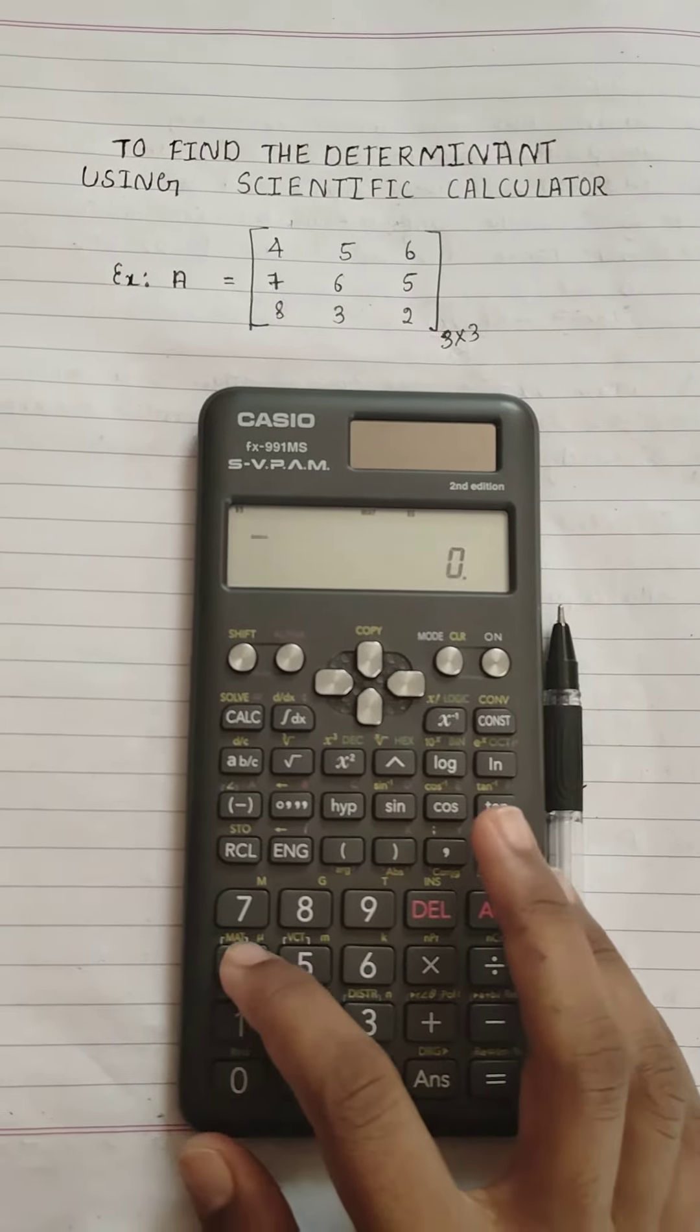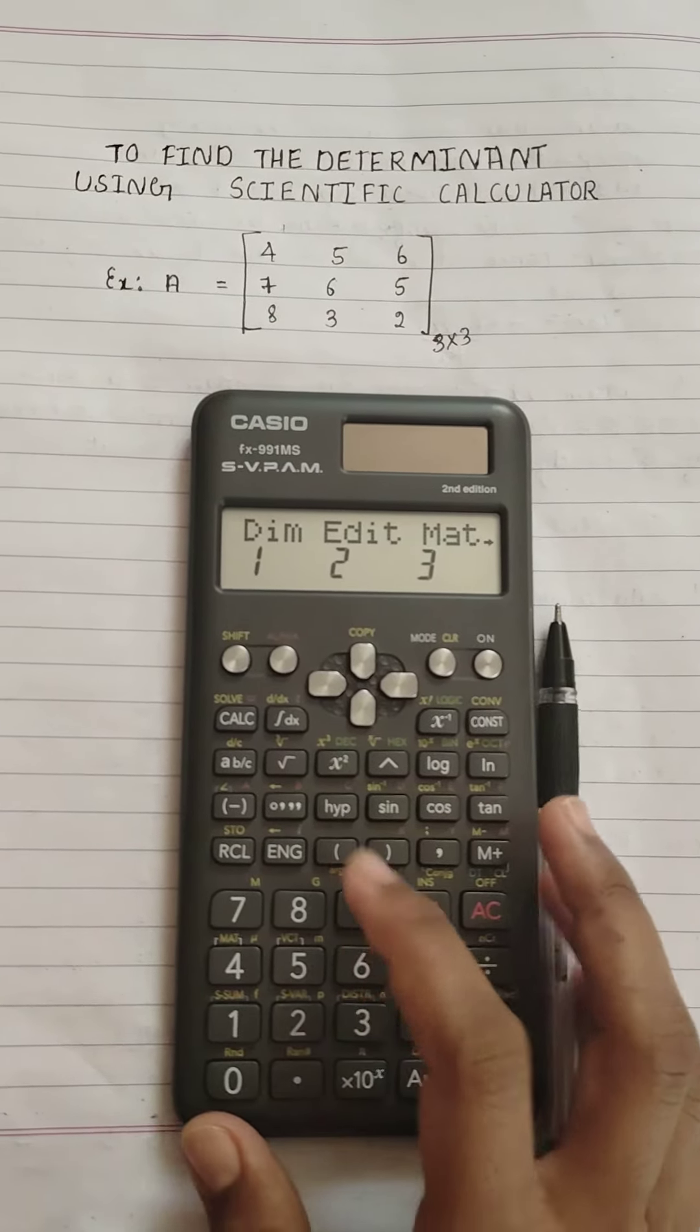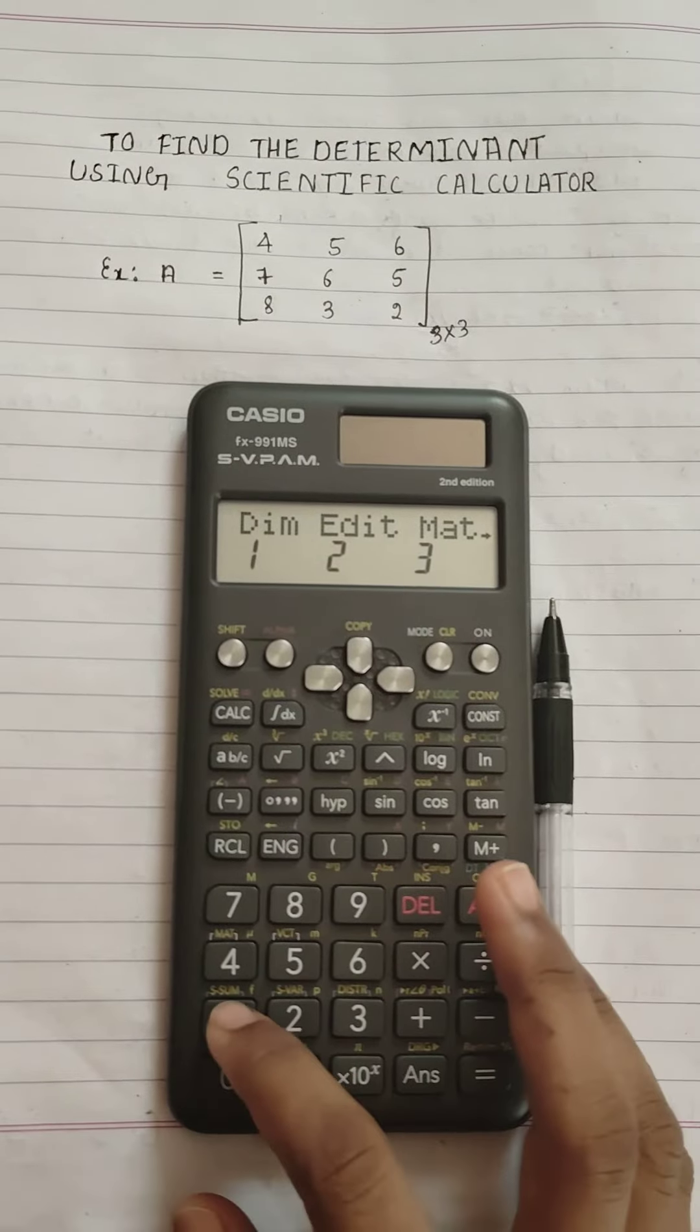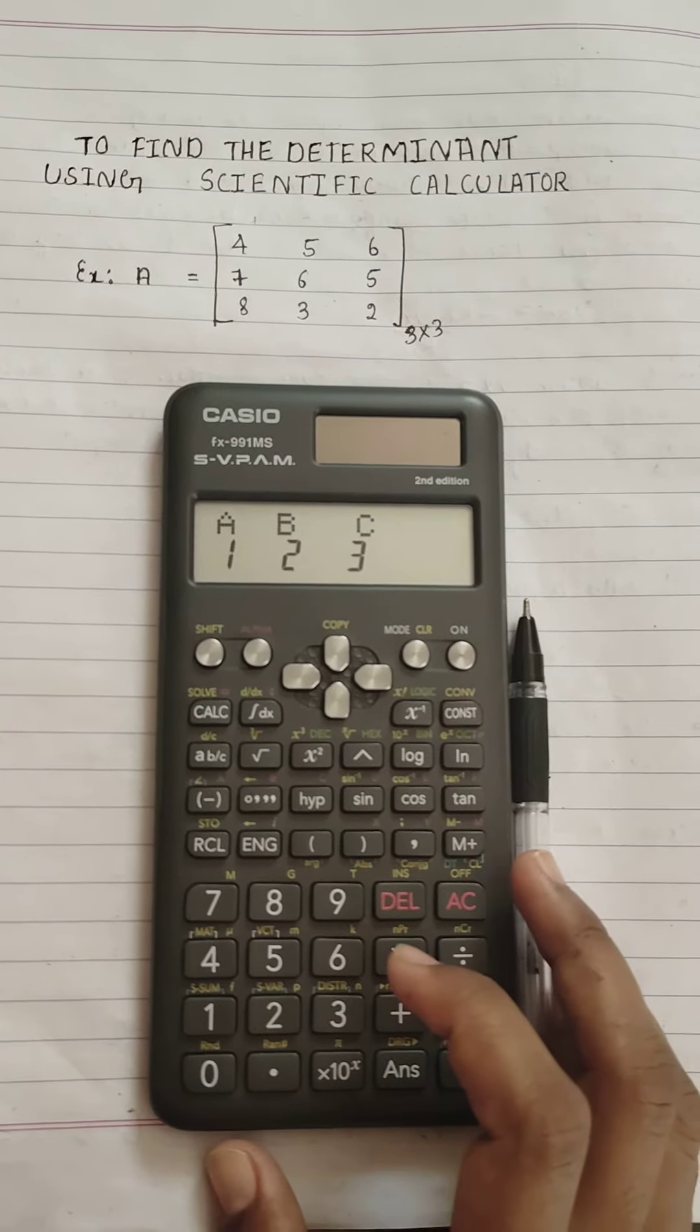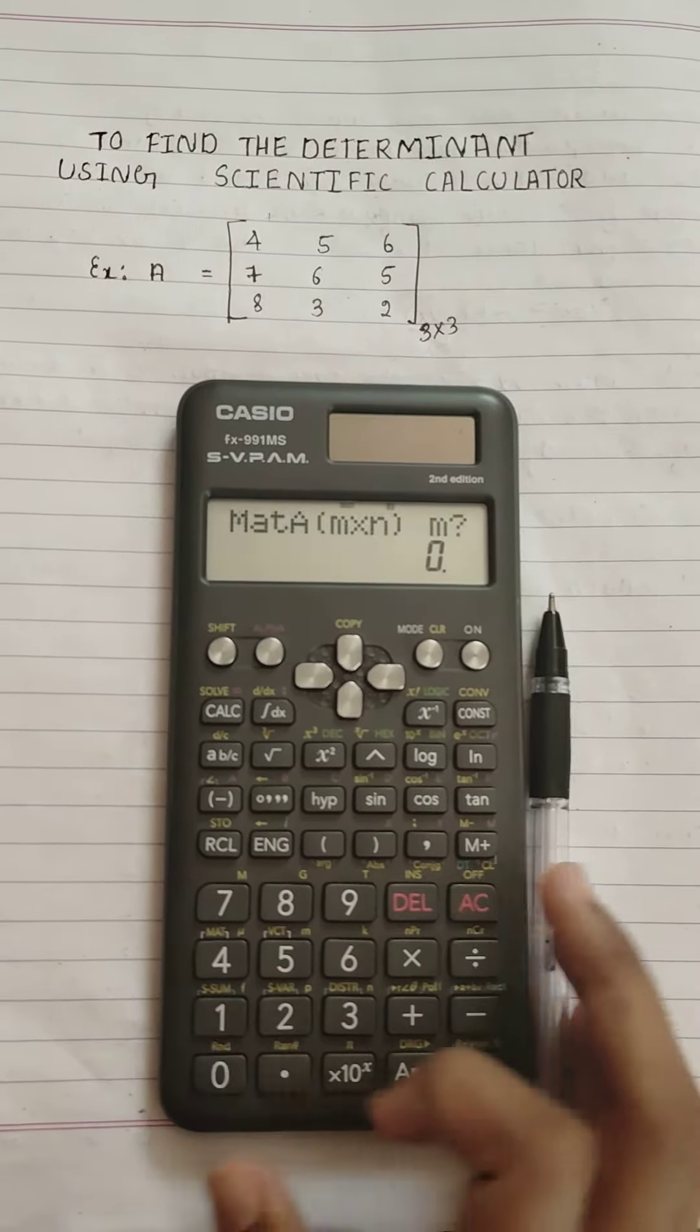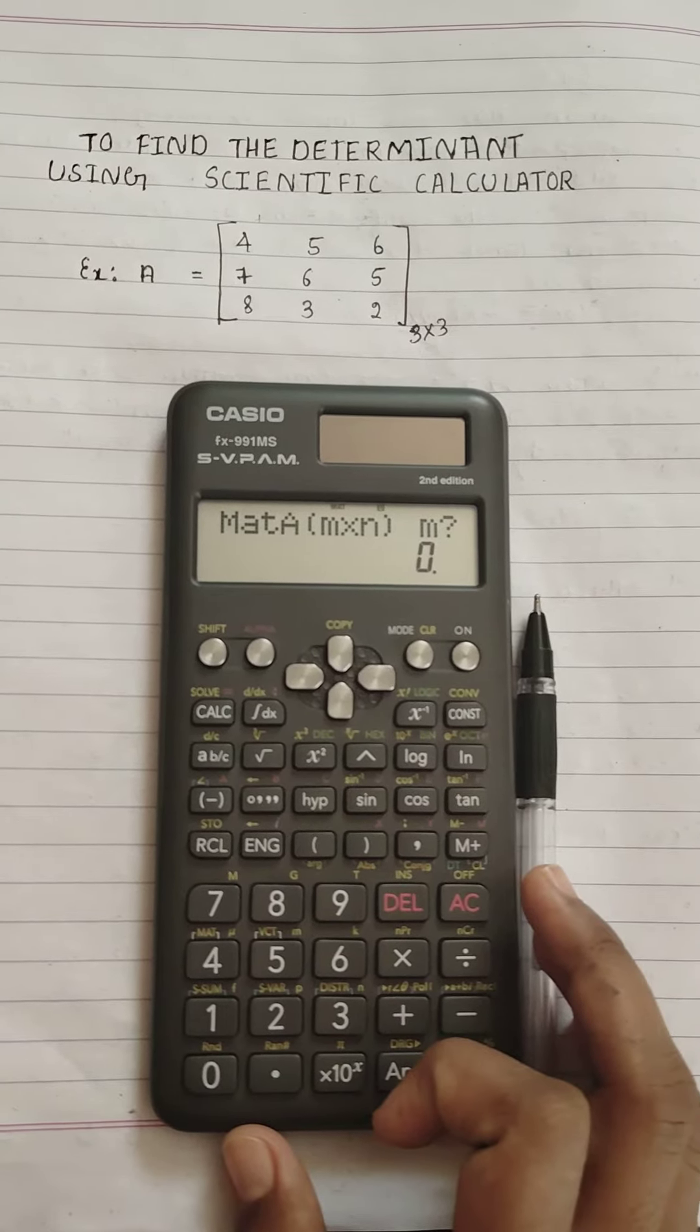Now press shift 4. We have to select the dimension of the matrix. Press 1 to select matrix A.